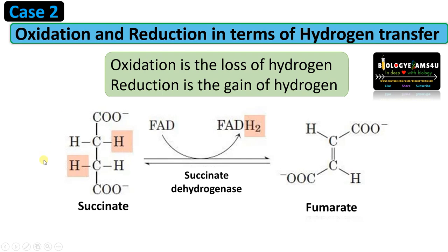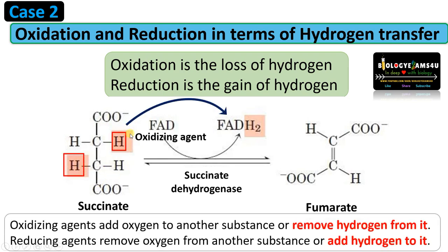Don't bother about this structure — we are focusing only on the hydrogen. Succinate has donated this hydrogen to FAD, forming FADH₂. So FAD is the oxidizing agent that receives hydrogen from succinate. FAD is reduced to form FADH₂ — reduction is the gain of hydrogen. Thereby succinate is oxidized, that is loss of hydrogen, to form fumarate.